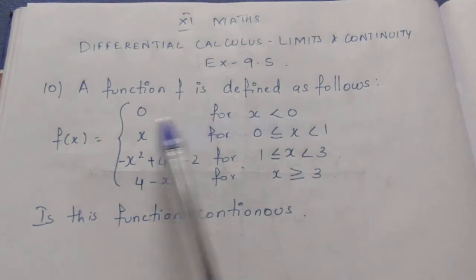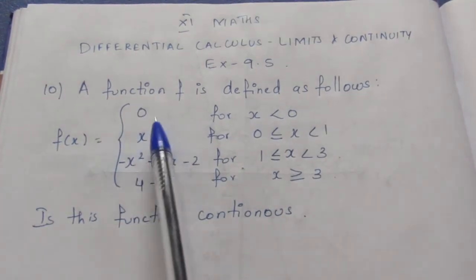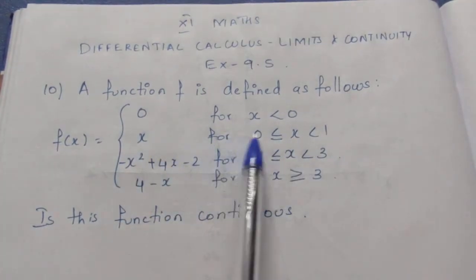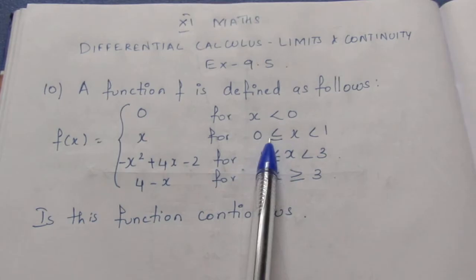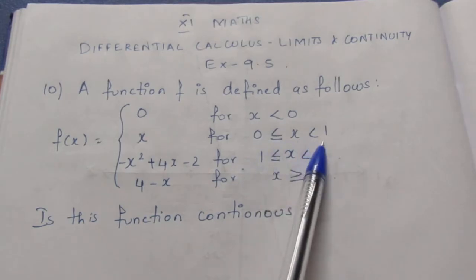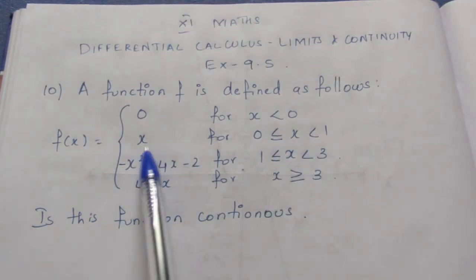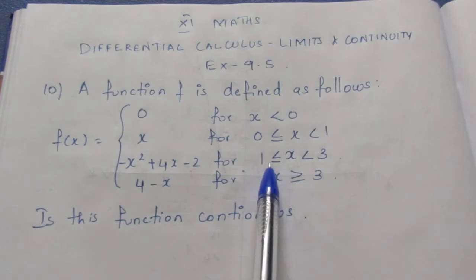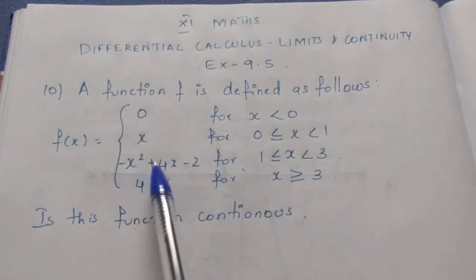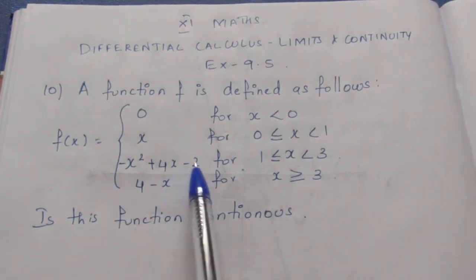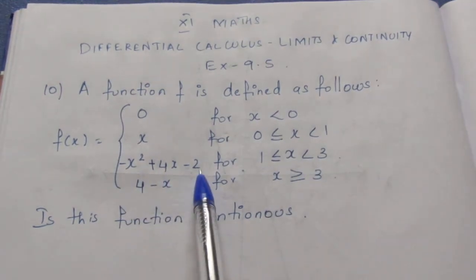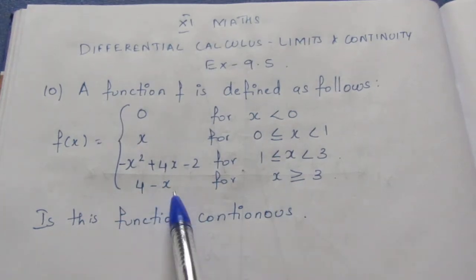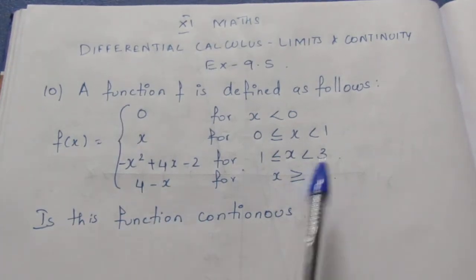The function f is defined as follows: f(x) equals 0 when x is less than 0; x for x greater than or equal to 0 and less than 1; minus x squared plus 4x minus 2 for x greater than or equal to 1 and less than 3; and 4 minus x for x greater than or equal to 3.